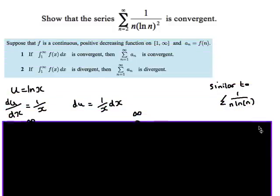Next question. Show that the series, and then I've got a sum from 2 to infinity of 1 over n, and then bracket ln n all squared. I'm going to show that that is convergent. This is a particularly difficult question because they don't really give us any clues as to which test to use.